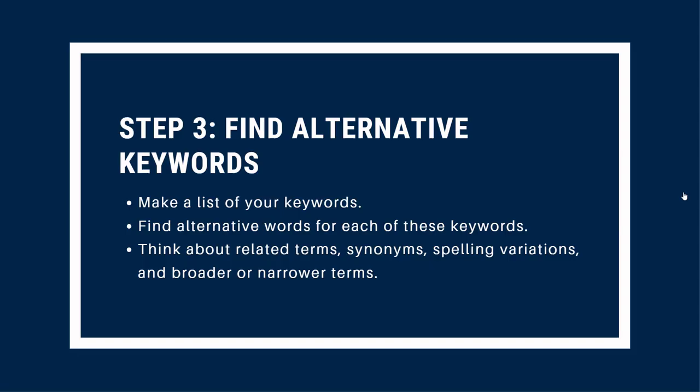Step three is finding alternative keywords. This is important because in English, we often use more than one word to describe the same idea. For example, someone might use the word job, and someone else might say work or career. These similar words that have related meanings are called synonyms. The resources in the library's catalog and databases also use synonyms and related words, and it's important to try searching for these so you don't miss out on useful information. It's also helpful to think about spelling variations — a good example is the word colour, spelled with a U in Canada but without a U in other parts of the world. Searching for different spelling variations can help you find more information. Finally, think about broader and narrower terms. A good example would be searching for healthcare if you're doing research on a topic related to nursing. Write down all of your keywords in a list, and one by one think of alternatives to those words.